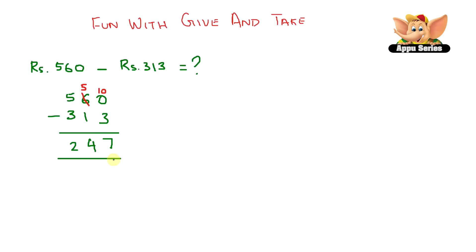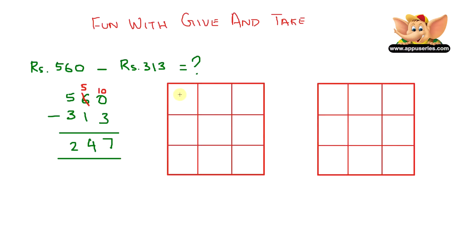So let me teach you a cool method to check your answer. Let's write it over here in these boxes. We have 560 minus 313 gave you 247, right? So let's write here in this other box 247 plus 313.